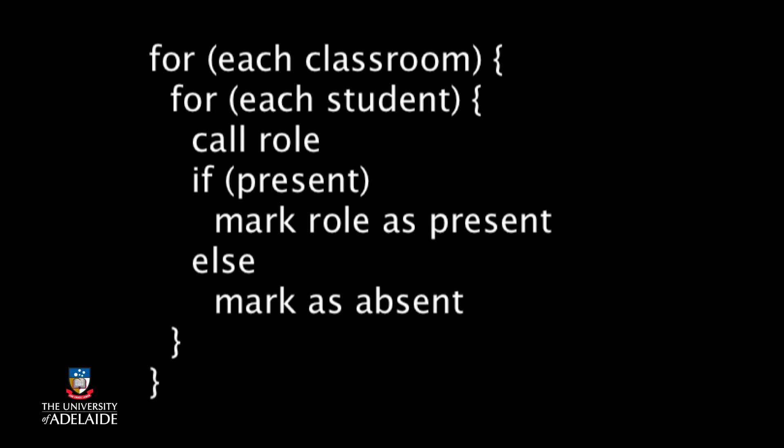If present, mark roll as present, else mark as absent. You'll see that we're using the for loops with two different loop variables because we want to change the value of two different things: the classroom and the student. We often refer to loops like this as being nested because one sits within the other, like eggs in a nest.